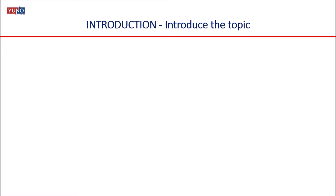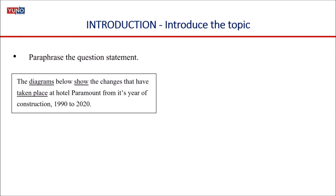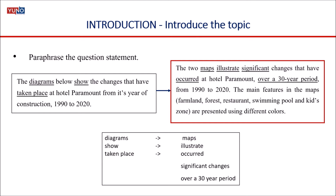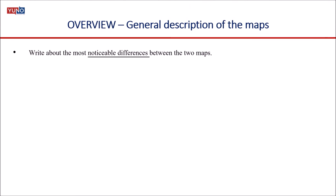Let's begin with the introduction. Begin your map summary with an introduction which is meant to introduce the topic to the examiner — you just need to tell what the maps show. For this, you can simply paraphrase the question statement in your own words using synonyms. A sample introduction could be: 'The two maps illustrate significant changes that have occurred at Hotel Paramount over a 30-year period from 1990 to 2020. The main features in the maps — farmland, forest, restaurant, swimming pool, and play zone — are presented using different colors.' Paraphrasing is done by replacing 'diagrams' with 'maps,' 'show' with 'illustrate,' and 'taken place' with 'occurred.' The phrase 'over a 30-year period' has also been added to express the duration.